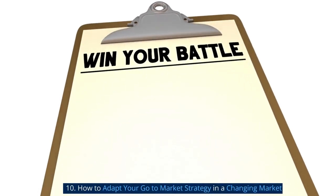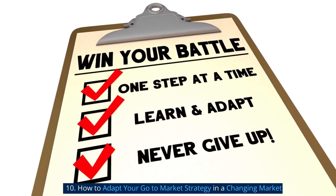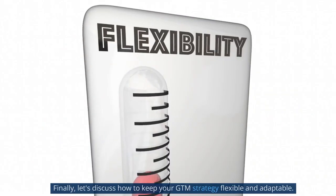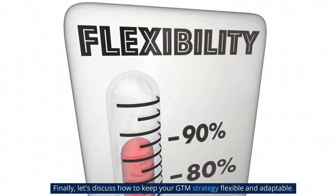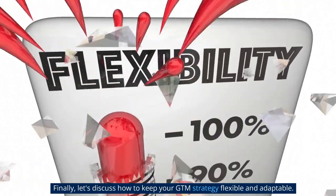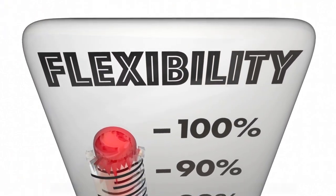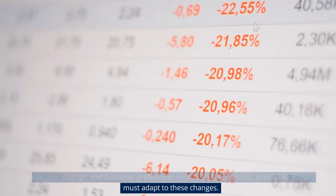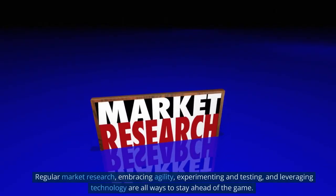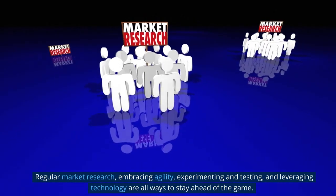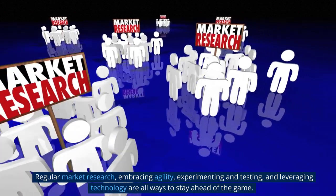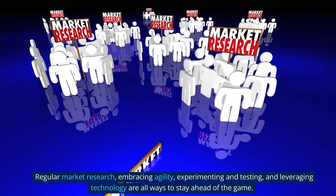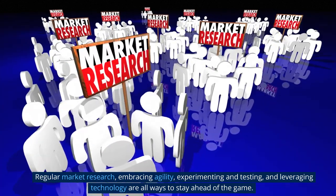Tenth, how to adapt your go-to-market strategy in a changing market. Let's discuss how to keep your GTM strategy flexible and adaptable. Markets change and customer preferences evolve. To stay relevant, your GTM strategy must adapt to these changes. Regular market research, embracing agility, experimenting and testing, and leveraging technology are all ways to stay ahead of the game.